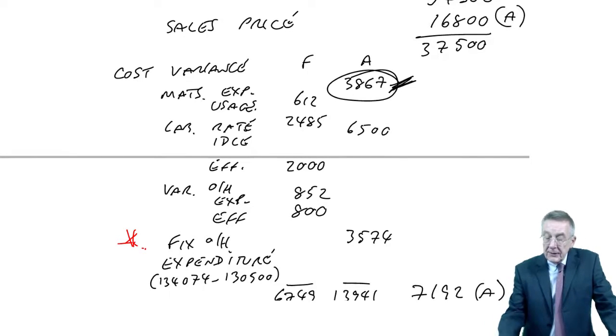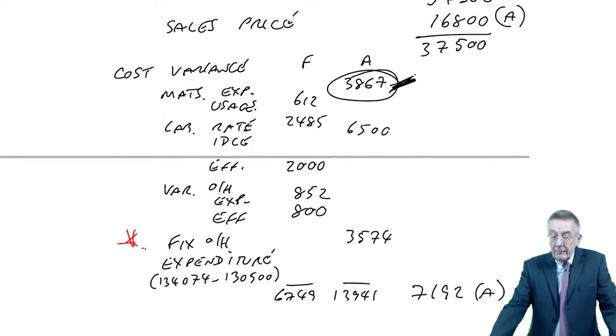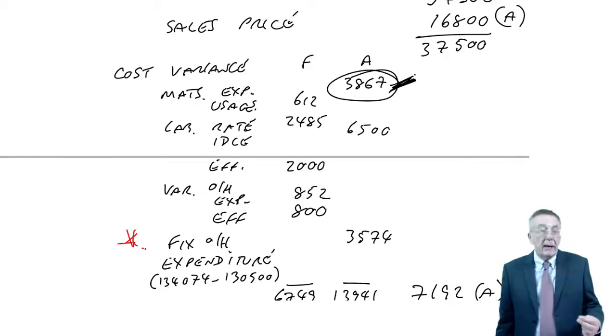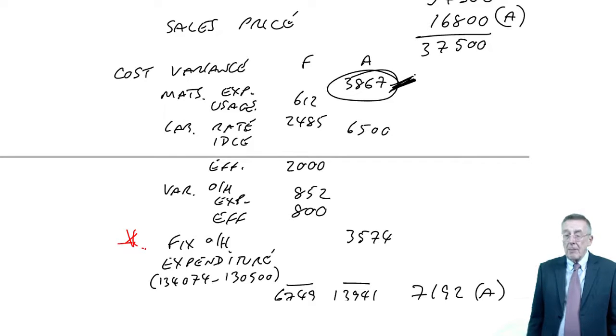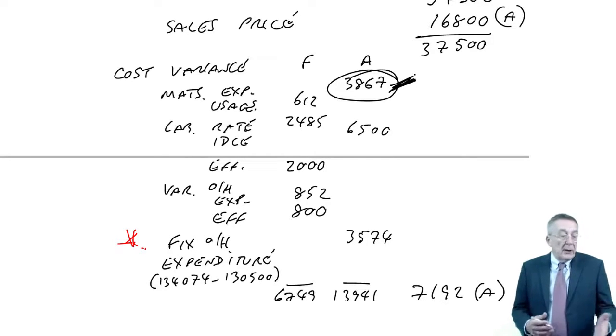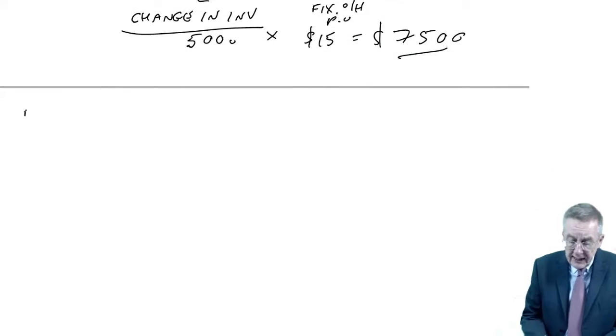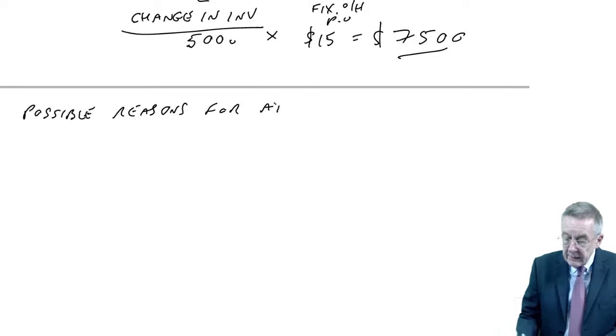If we look at that materials expenditure variance, it was adverse 3867. Remember, that's simply related to one thing. It's nothing to do with what material and how much material we used. It was simply checking did we pay 450 a kilo or not. We obviously paid more than 450 a kilo.